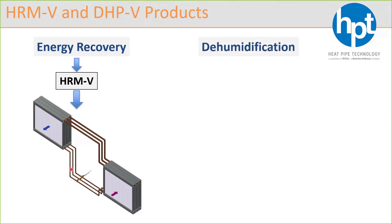The other type of product we offer is dehumidification, denoted as DHPV, which stands for Dehumidifier Heat Pipes, Vertical Tubes. HRMV and DHPV are the two acronyms you're going to see extensively in our documentation, either online or wherever we provide information on these products.